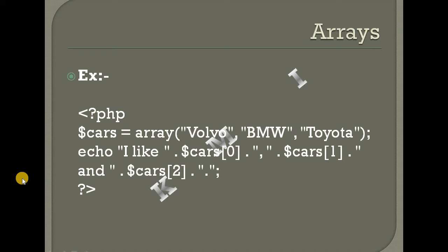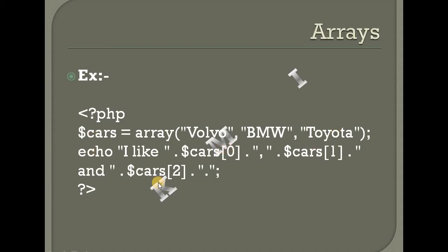For example, in PHP, a variable called 'cars' is declared equal to an array containing Volvo, BMW, and Toyota. We can then access elements using echo with car[0], car[1], car[2], and so on.